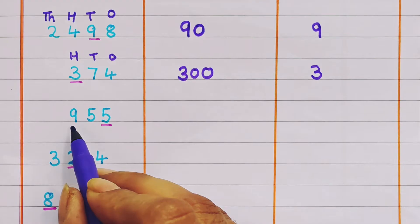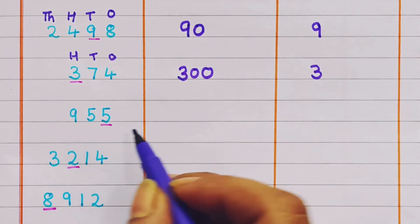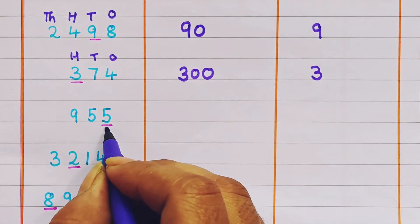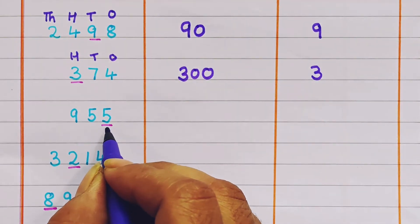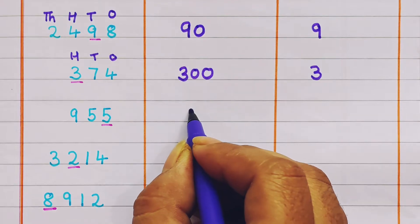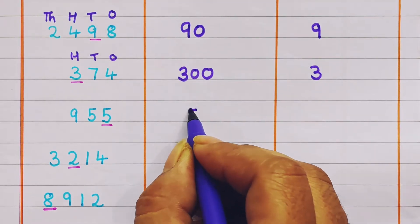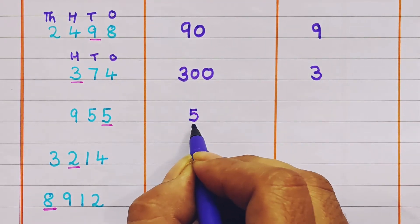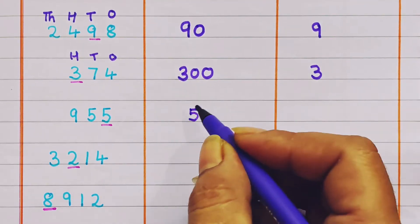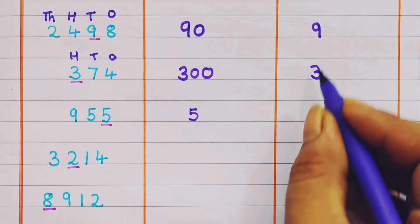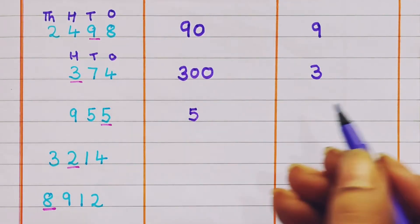Next example: 955. This 5 is present in the ones place, so the place value will be 5 itself because it is in the ones place.